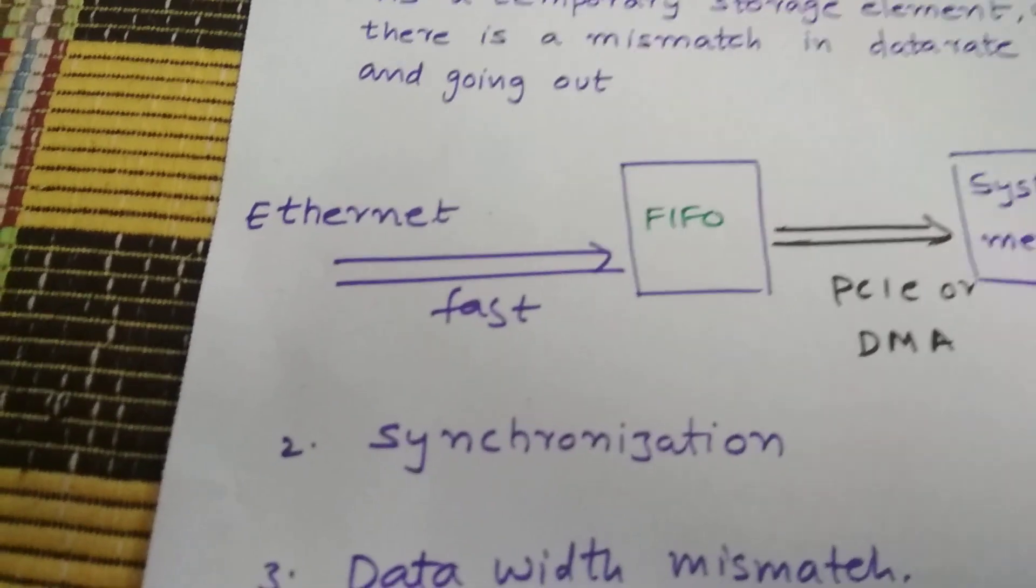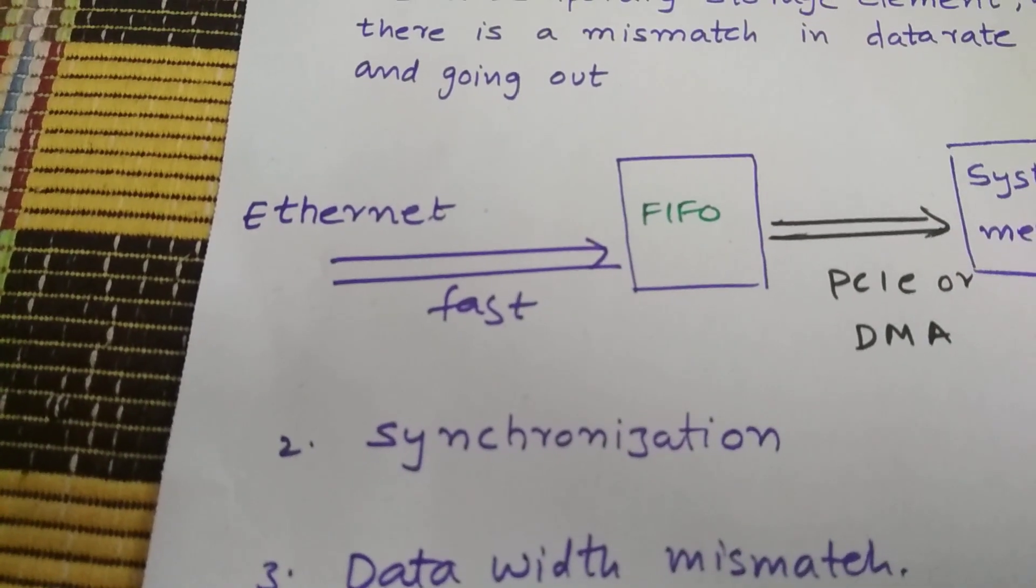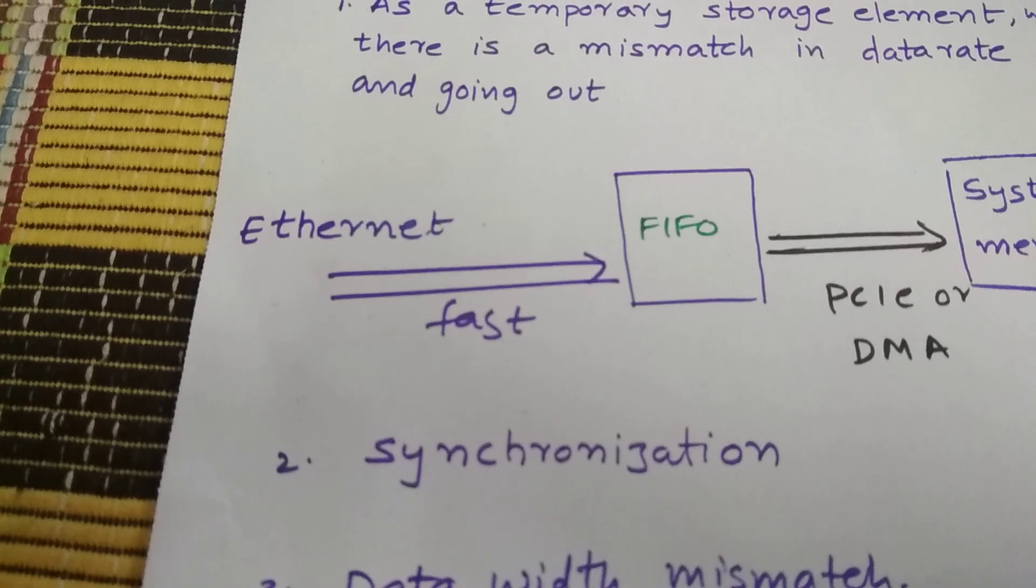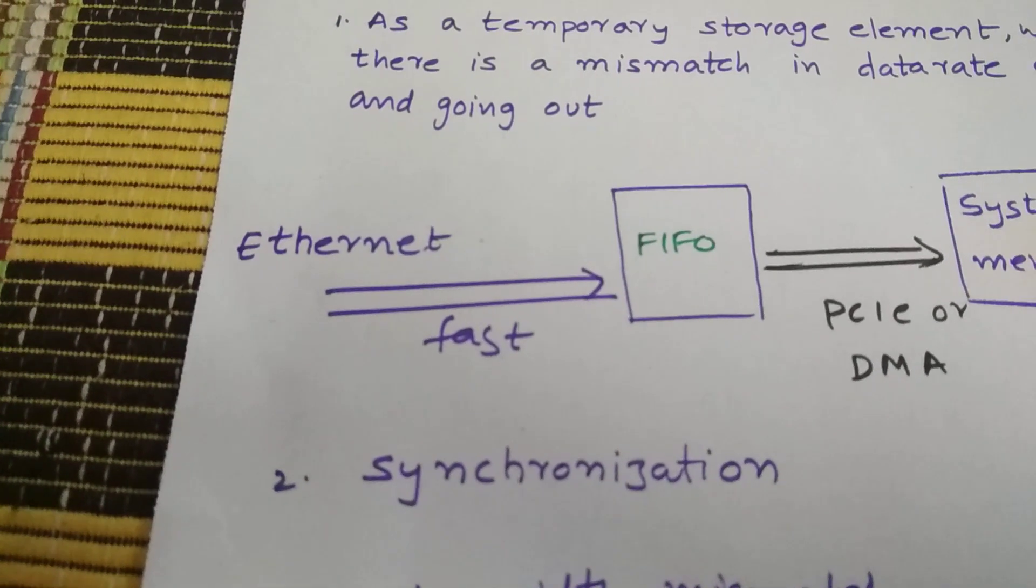and device B, which is getting the input from device A, that means device A is connected to device B, but device B has 16 bit input width.